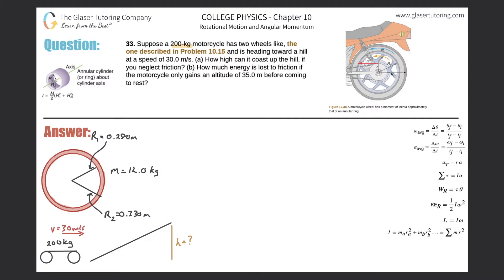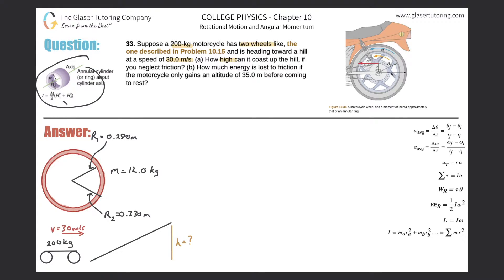Problem 33: suppose a 200 kilogram motorcycle has two wheels like the one described in problem 10.15 and is heading toward a hill at a speed of 30 meters per second — how high can it coast up the hill if you neglect friction? We'll use the same values from that question: internal radius 0.2 meters, external radius 0.33 meters. The wheel is approximated as an annular cylinder, with each wheel having a mass of 12 kilograms.